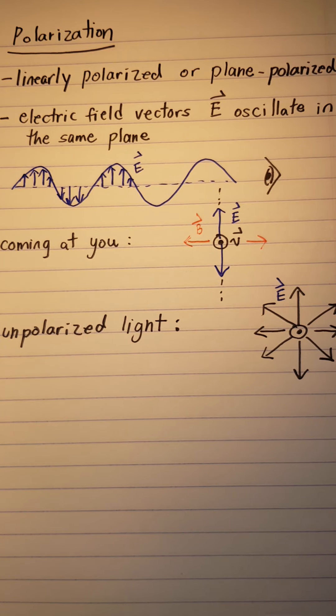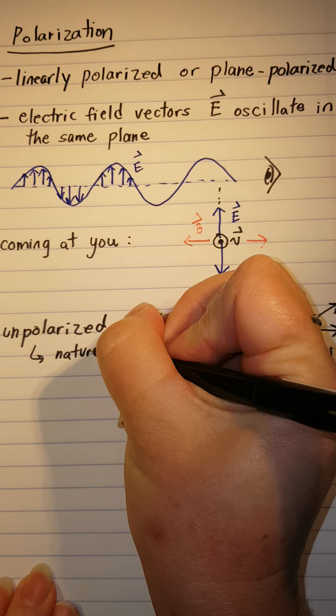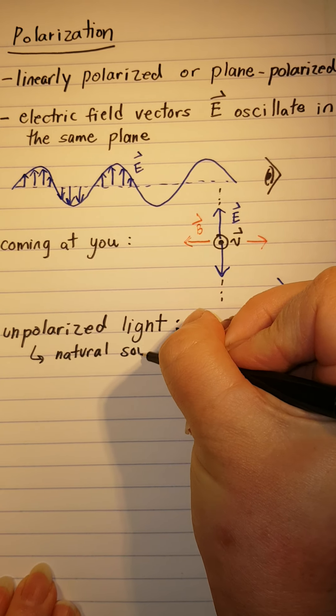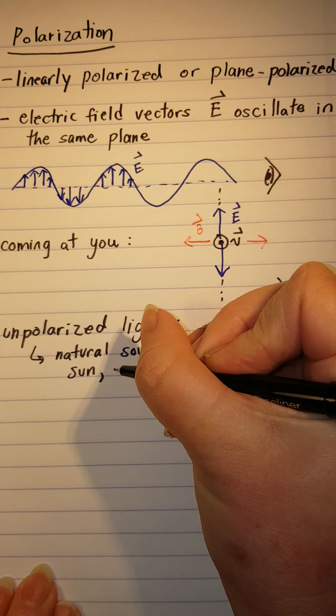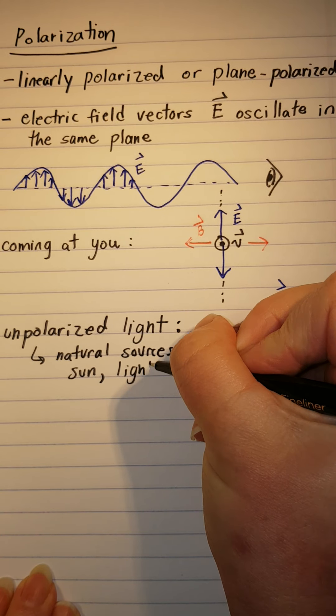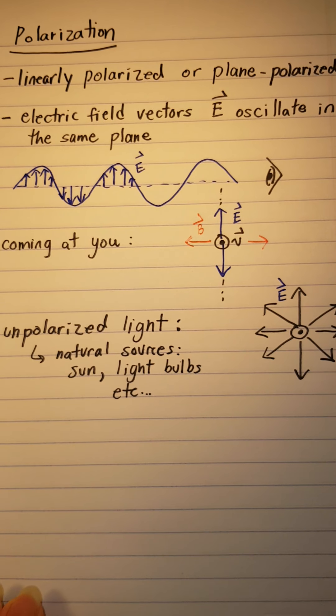So like I said, that's what we get from natural sources like the sun or regular light bulbs, incandescent light bulbs, etc.